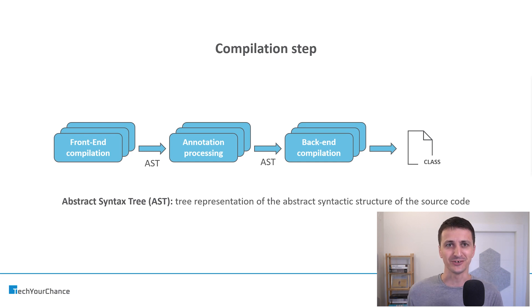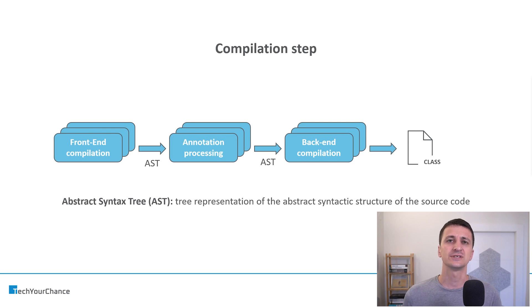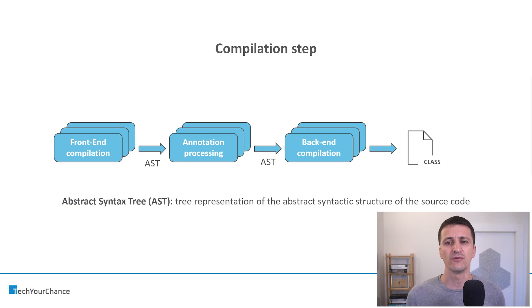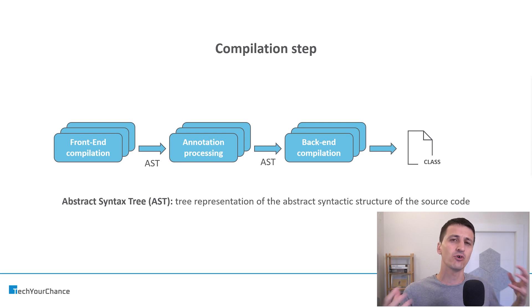This is an abstract description of what AST is, but basically you can imagine that the front-end compilation step takes your source code and produces a tree-like structure that captures the essence of that source code. The reason we use a tree data structure is because trees are much simpler to traverse — you can use breadth-first search, depth-first search, or some combination thereof. So AST is just a simpler format for annotation processing to consume before passing it further to the back-end compilation step.